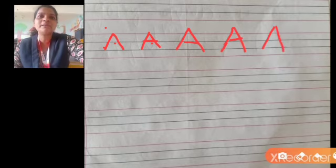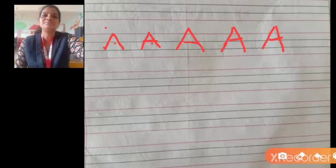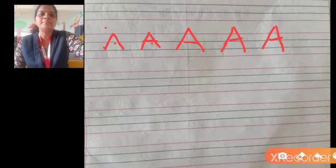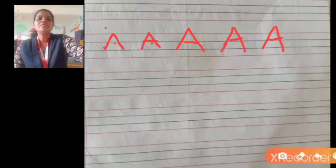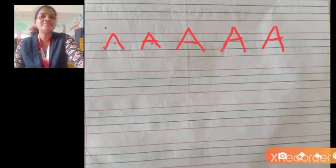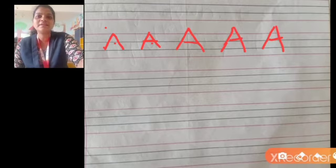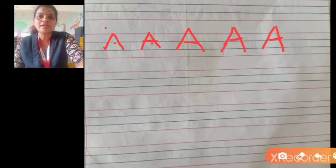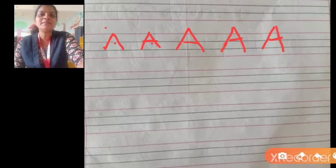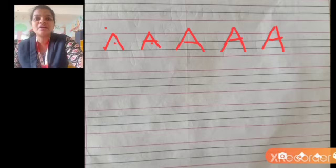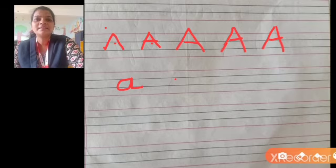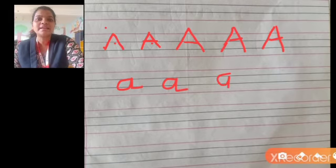Now how to write small letter A. Look here, small letter A. First you have to write curved line, after that standing line. Curved line, standing line. Curved line, standing line.